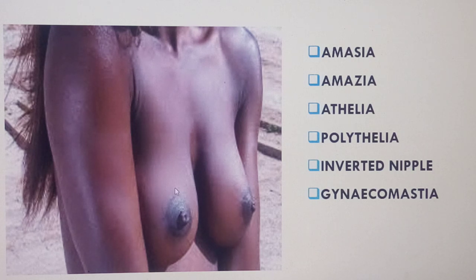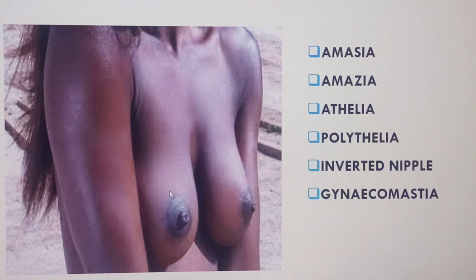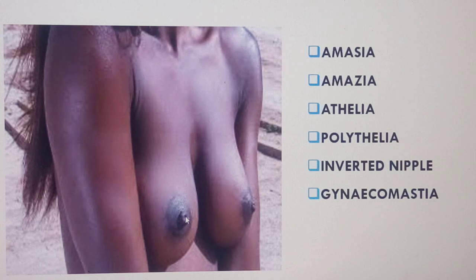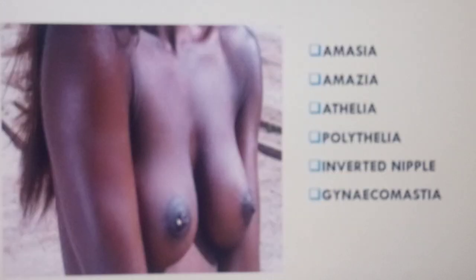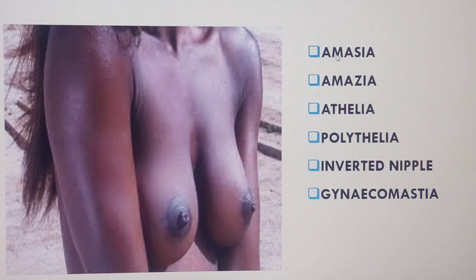As one ages, the breasts will no longer be hemispherical or conical. They will sag and tend to go beyond the sixth rib. The nipple will no longer be at the level of the fourth intercostal space, and when the breast becomes very heavy, the nipple may go below the fourth intercostal space.